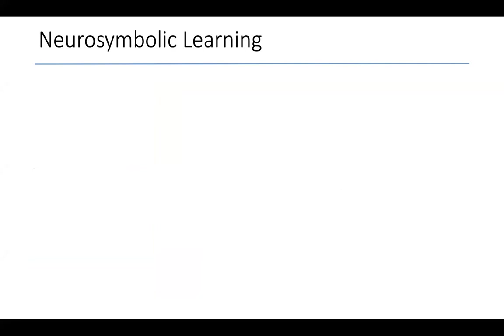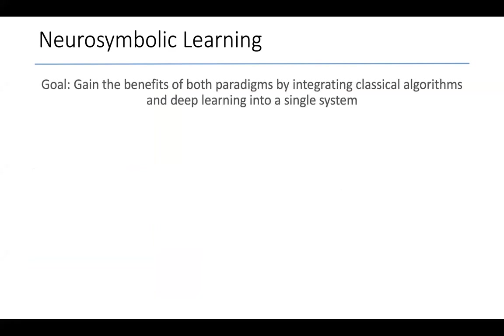One solution to these problems is what is called neurosymbolic learning. This is an emerging paradigm whose goal is to combine the benefits of both classical algorithms and deep learning by integrating them into a single system. Let me now show you visually what I mean by each of these three paradigms.